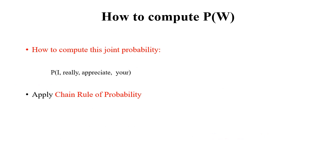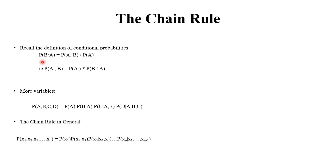Now let's discuss how we can compute the probability of a sentence. In order to compute this probability, we apply joint probability. Consider the sentence 'I really appreciate here.' We apply conditional probability to decompose it.